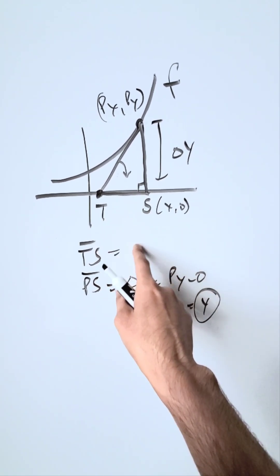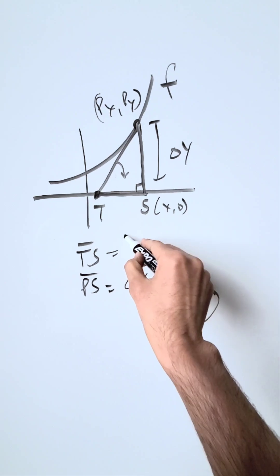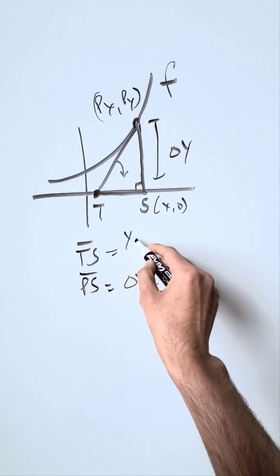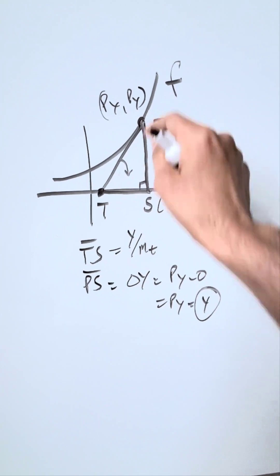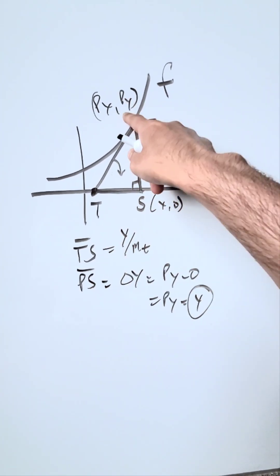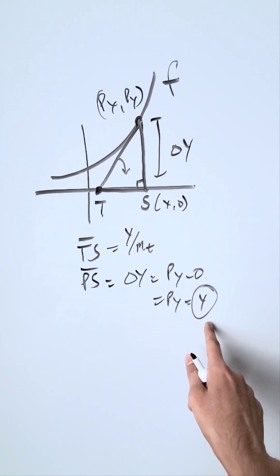The length of the subtangent is equal to a specific formula from differential calculus. It's equal to a certain y value divided by your slope of your tangent line on your function at a particular point. This y value is no different than this py value.